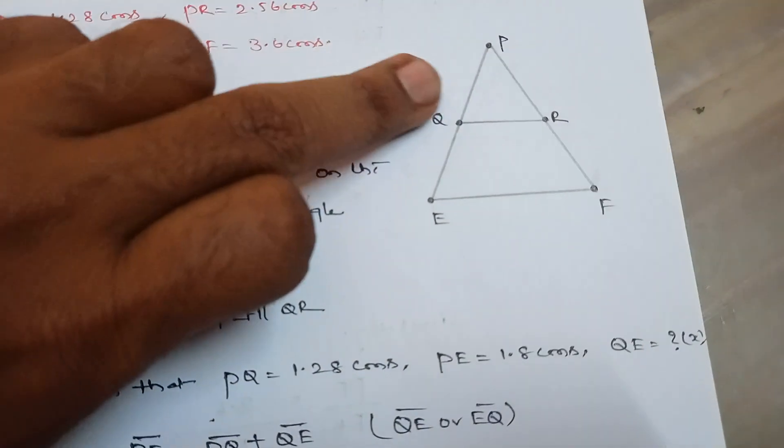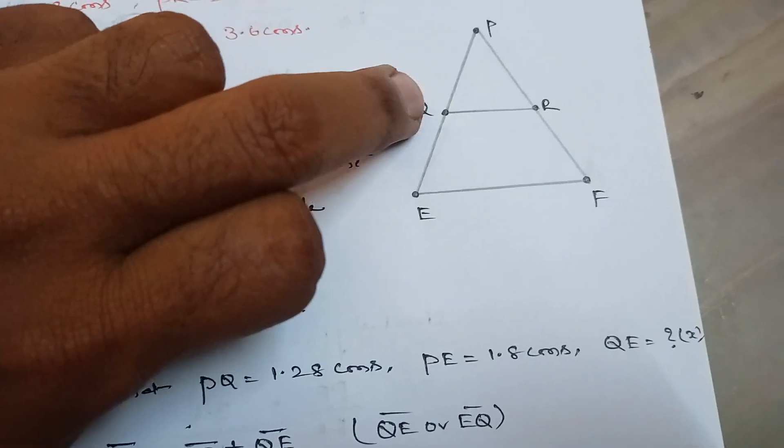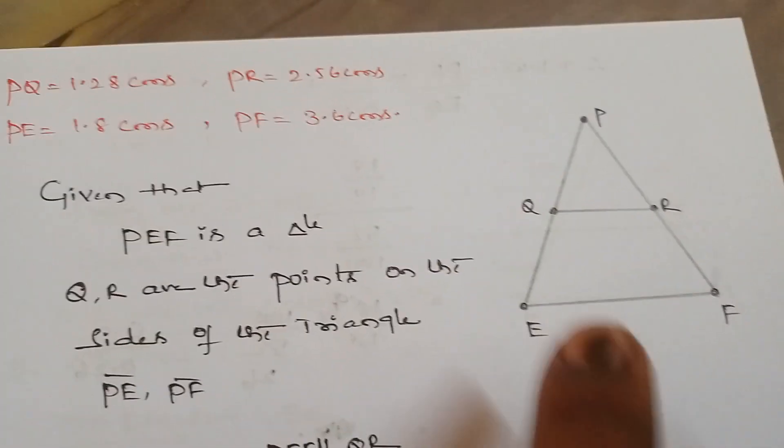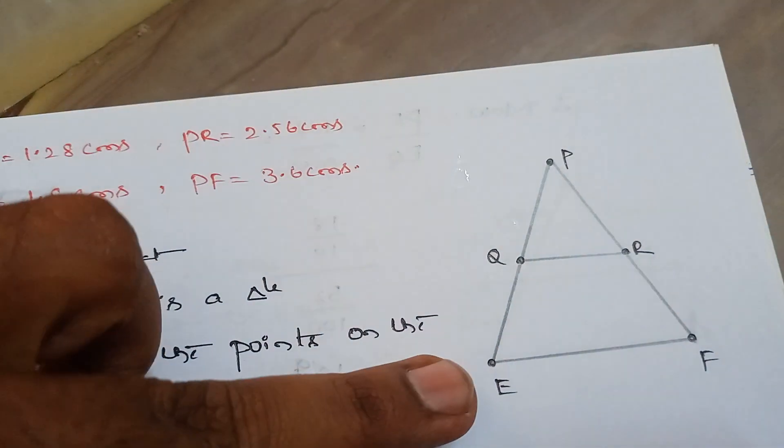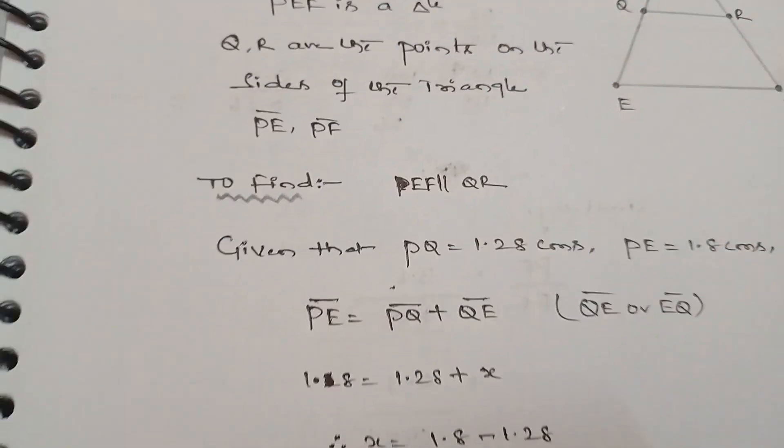Now see, from the triangle, PE can be written as PQ plus QE, right? Yes or no? PE can be written as PQ plus QE. Okay, first write down that.